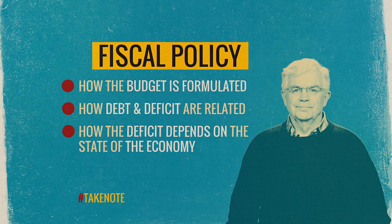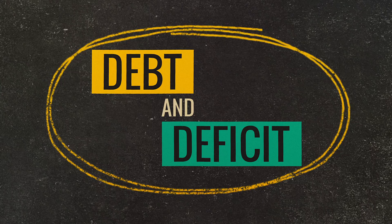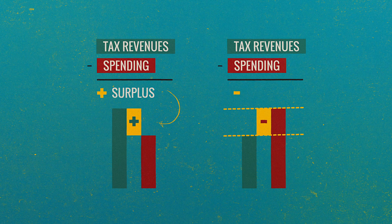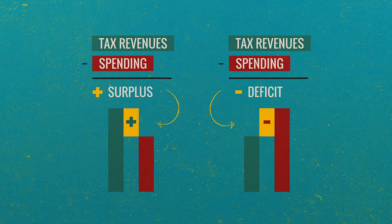Now let's consider how the debt and the deficit are related. Frequently people get the debt and the deficit confused, so let's be very precise. If you take tax revenues and subtract spending, you get a measure of the surplus — it's a surplus if that difference is positive. If the difference is negative, meaning tax revenues are less than spending, then we say there's a deficit.